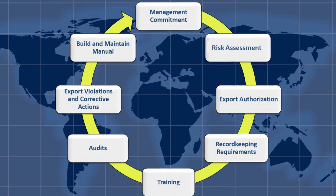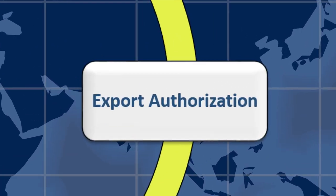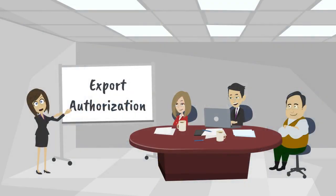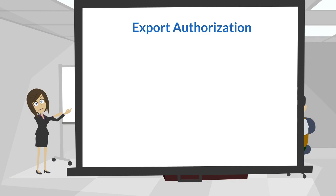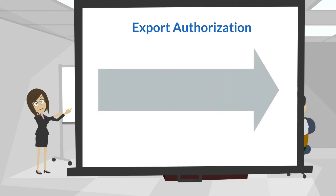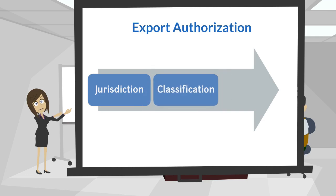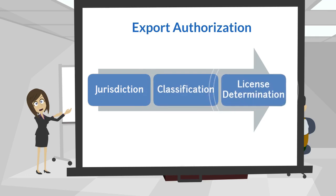The third element is Export Authorization. The circular chart focuses on Export Authorization. Understanding and implementing Element 3 is critically important to Export Compliance. It involves determining agency jurisdiction, item classification, making license determinations, and developing customer screening procedures. The words 'jurisdiction,' 'classification,' and 'license determinations' appear on the screen.